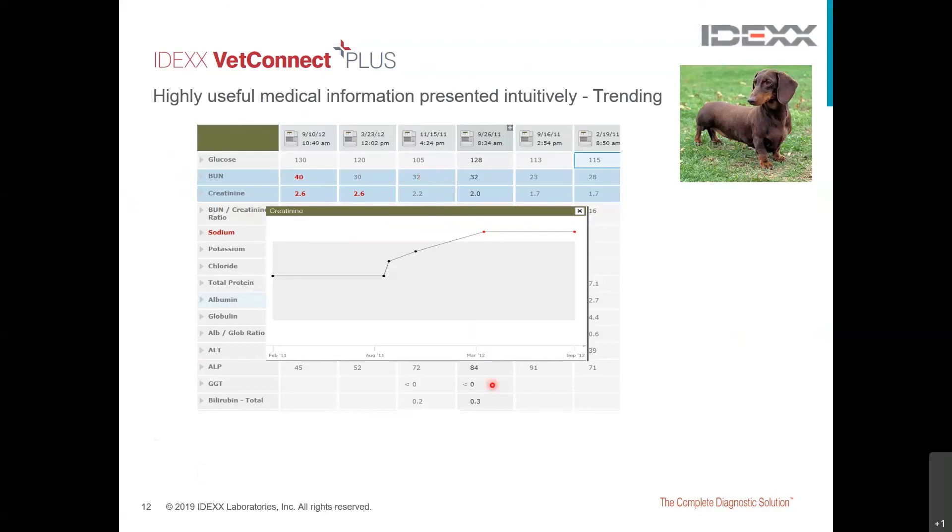However, if we use this graphing or trending function of VEC Connect Plus, in which this grey shaded area here represents our value within the reference interval, you could actually really easily appreciate that over time, motor mouse's creatinine is actually trending upwards within the reference interval, and that's likely to be pretty significant. So, it would enable us to detect meaningful change within the reference interval, and therefore give us the opportunity to look into this sooner.